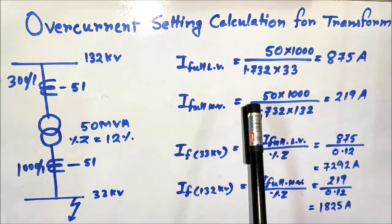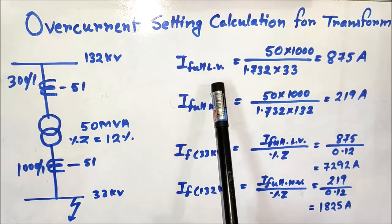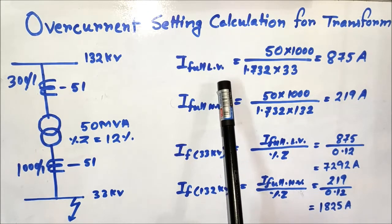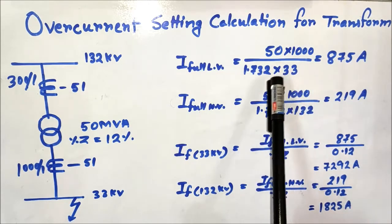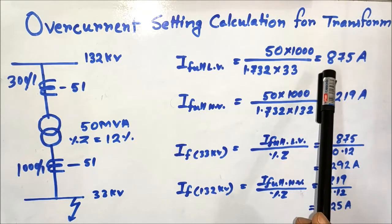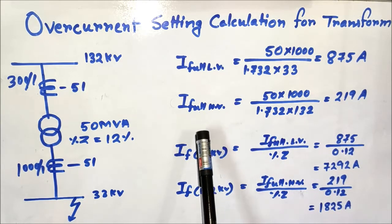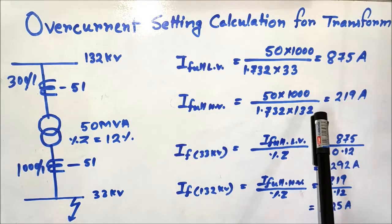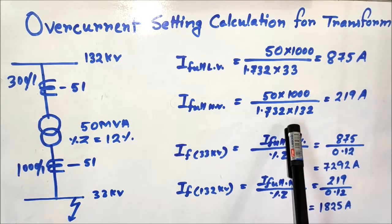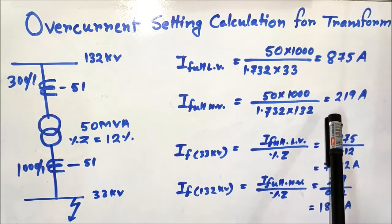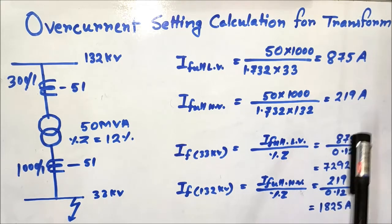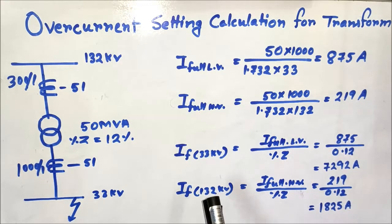The full load current for the LV side (33kV side) is given by 50×1000 divided by √3×33, which comes to approximately 875 amperes. The full load current for the HV side is 50×1000 divided by √3×132kV, which comes to approximately 219 amperes.